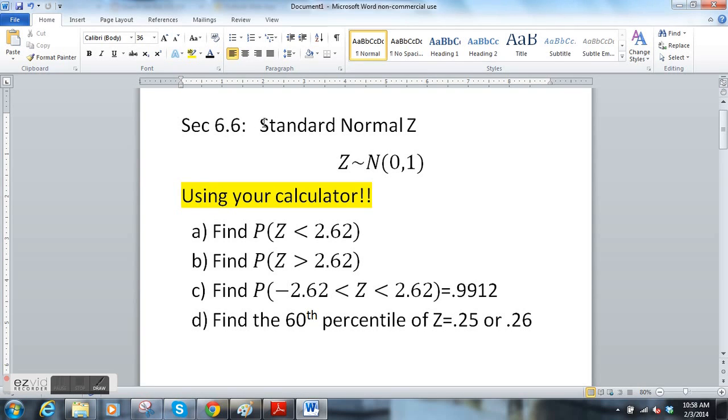Hi again. This is section 6.6, the standard normal Z. So Z is normally distributed with the mean of 0 and standard deviation of 1. We are going to find some probabilities using our calculator.